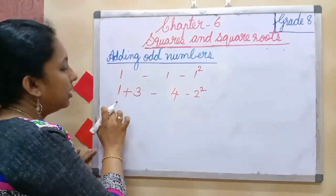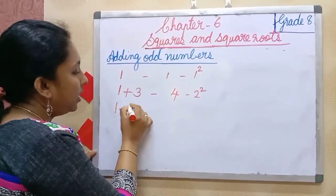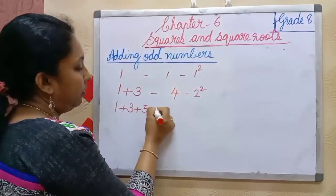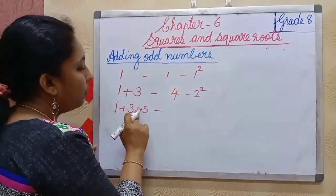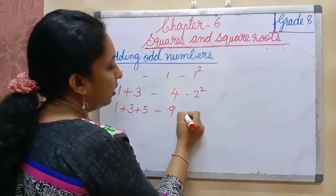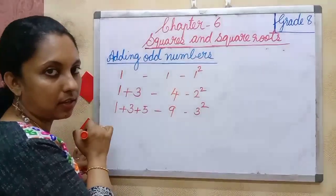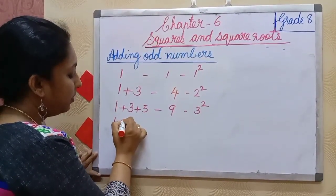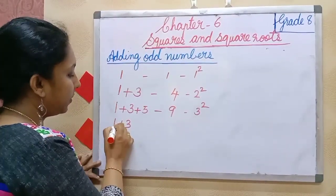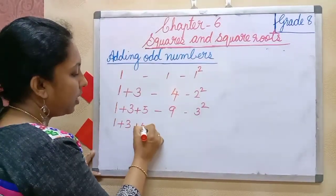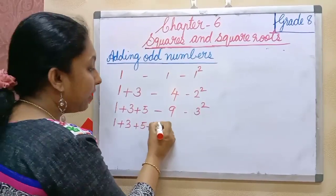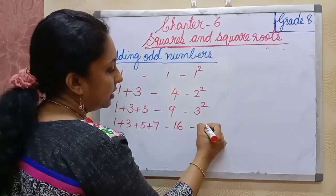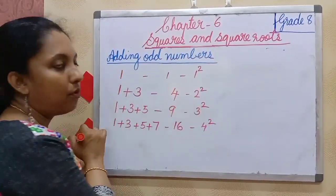Then the first three odd natural numbers: 1 plus 3 plus 5. That is 4 plus 5 equals 9. We can express that as 3 square. Then the first four odd natural numbers: 1 plus 3 plus 5 plus 7. That is 9 plus 7 equals 16. We can express 16 as 4 square.